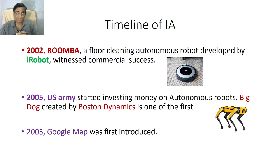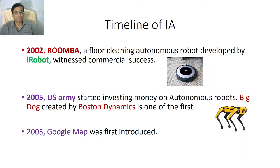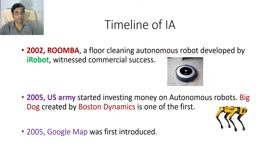In 2002, Roomba, a floor-cleaning autonomous robot, was developed by the company iRobot, and that witnessed perhaps the first commercial success. Because unless a product enters the common man's household — robots had been in industry for long — but Roomba was the first robot with the potential to work inside the home, cleaning floors, which is an everyday requirement. Roomba showed real potential for success.